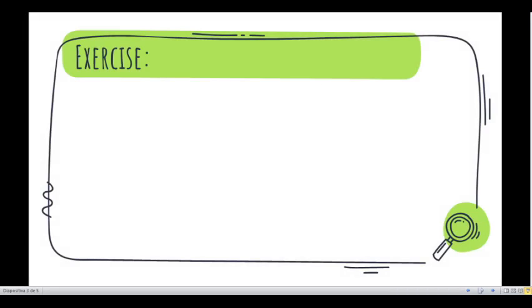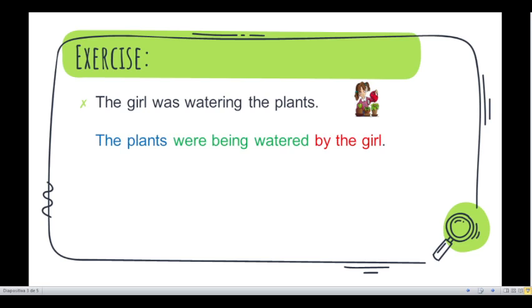Let's continue. Number three. The girl was watering the plants. Let's start the passive with the object. The plants. And what's next? I will give you some seconds. Let's see the answer. The plants were being watered by the girl. Very good.